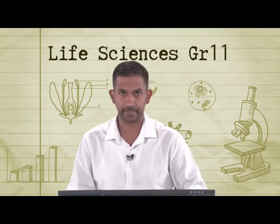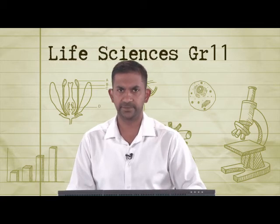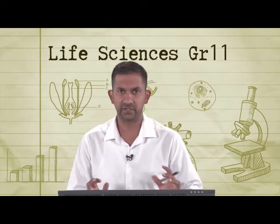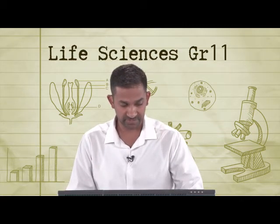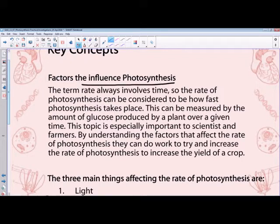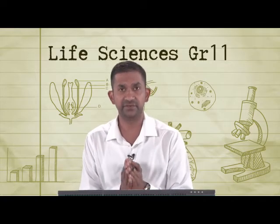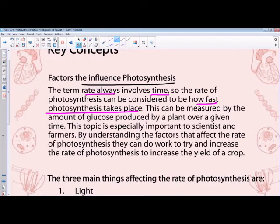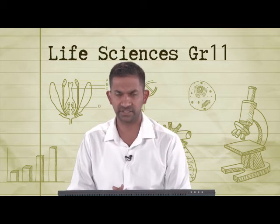Now let's look at what factors affect the process of photosynthesis physically, and how these can be tested in a practical investigation. The term rate always involves time, so the rate of photosynthesis refers to how fast photosynthesis takes place. We can measure the rate of photosynthesis by the amount of glucose produced by a plant over a given period of time. Measuring glucose or oxygen as a byproduct would indicate the rate at which photosynthesis occurs.